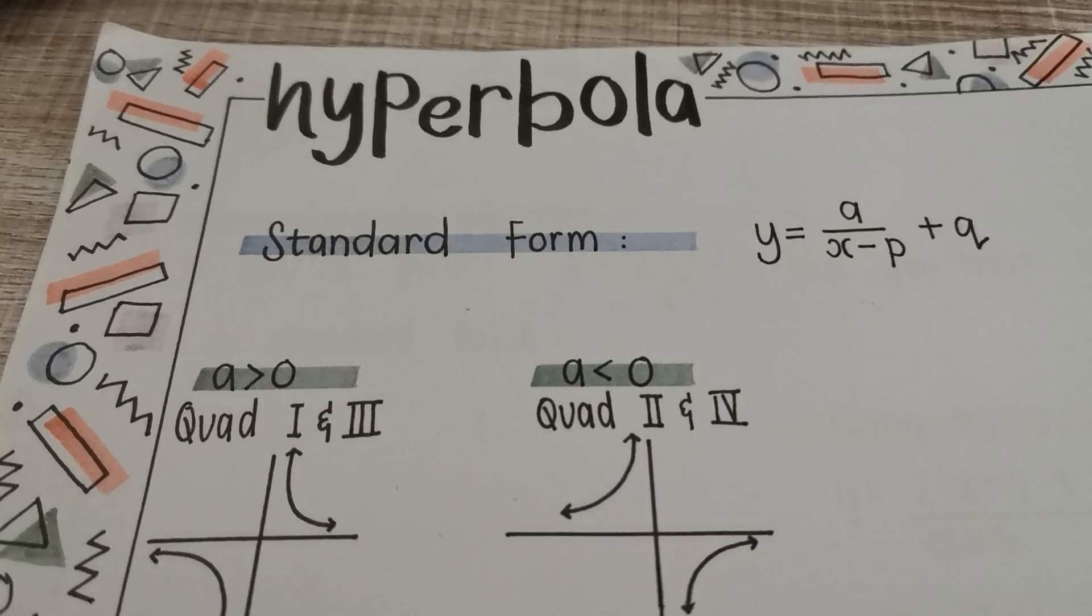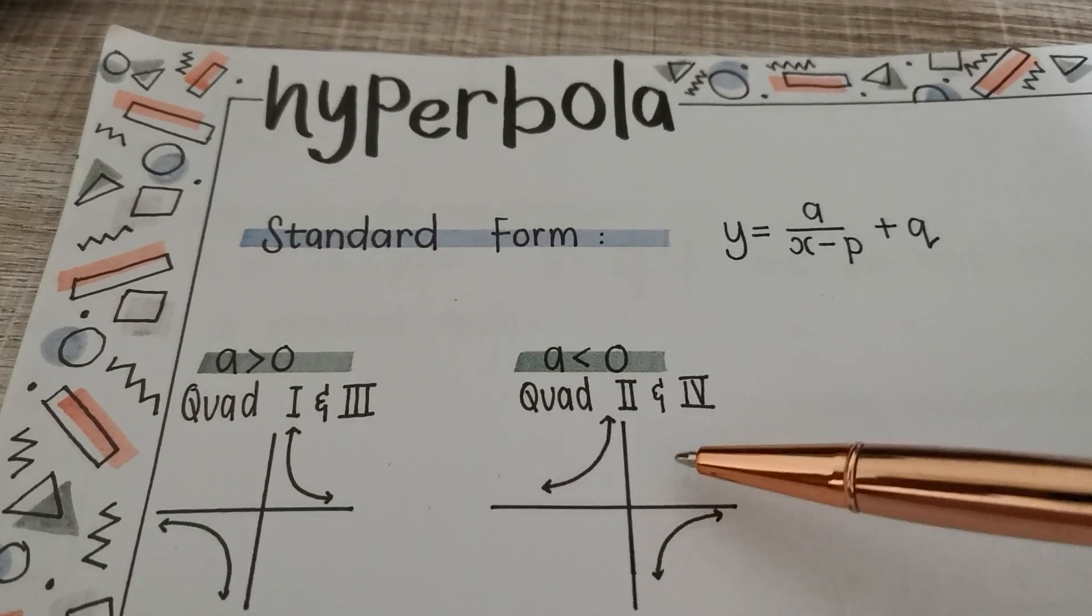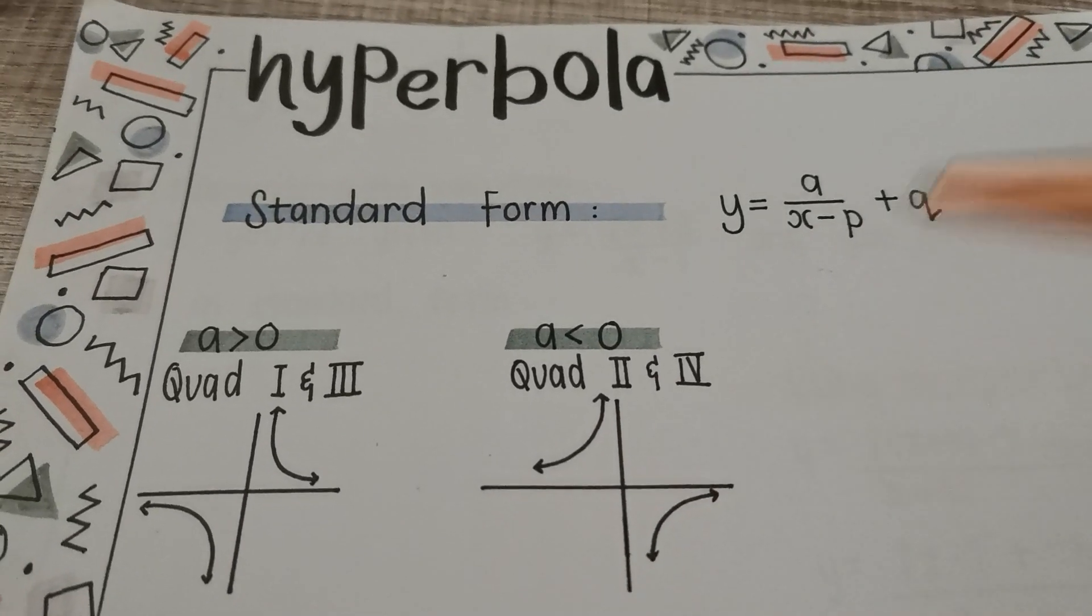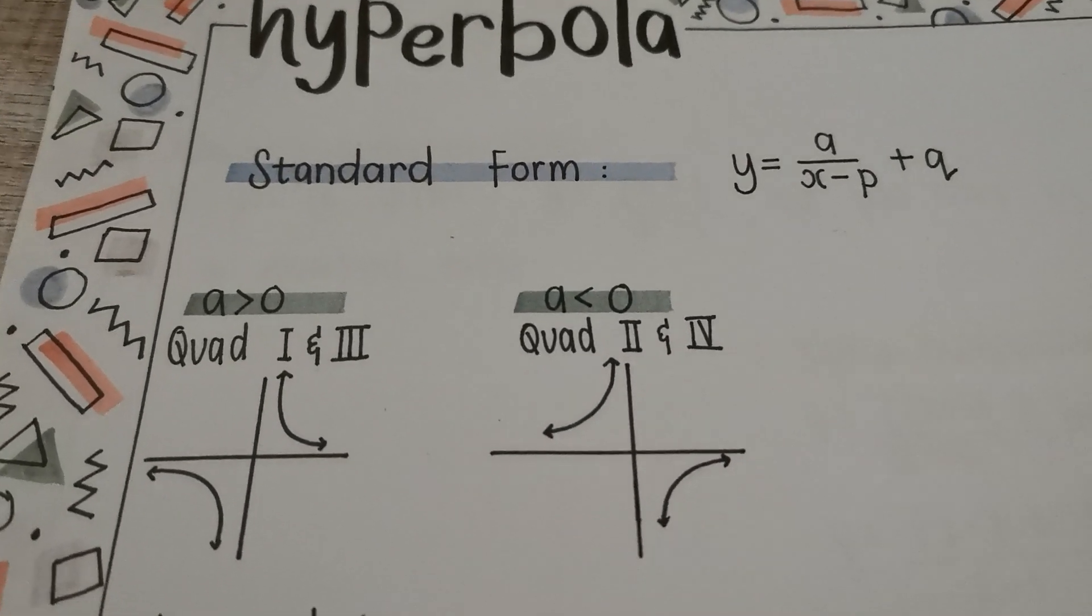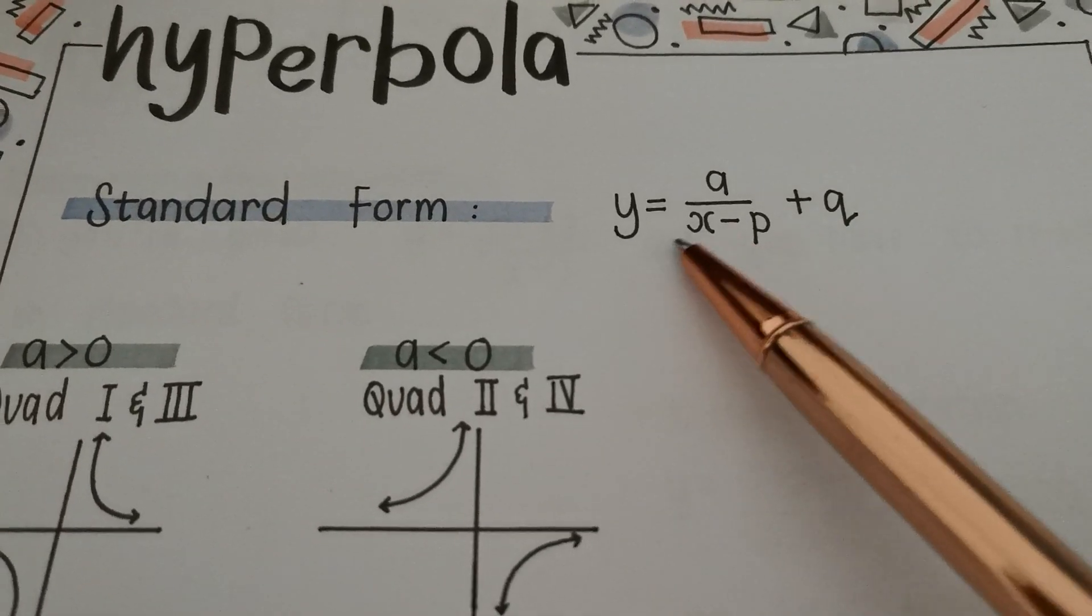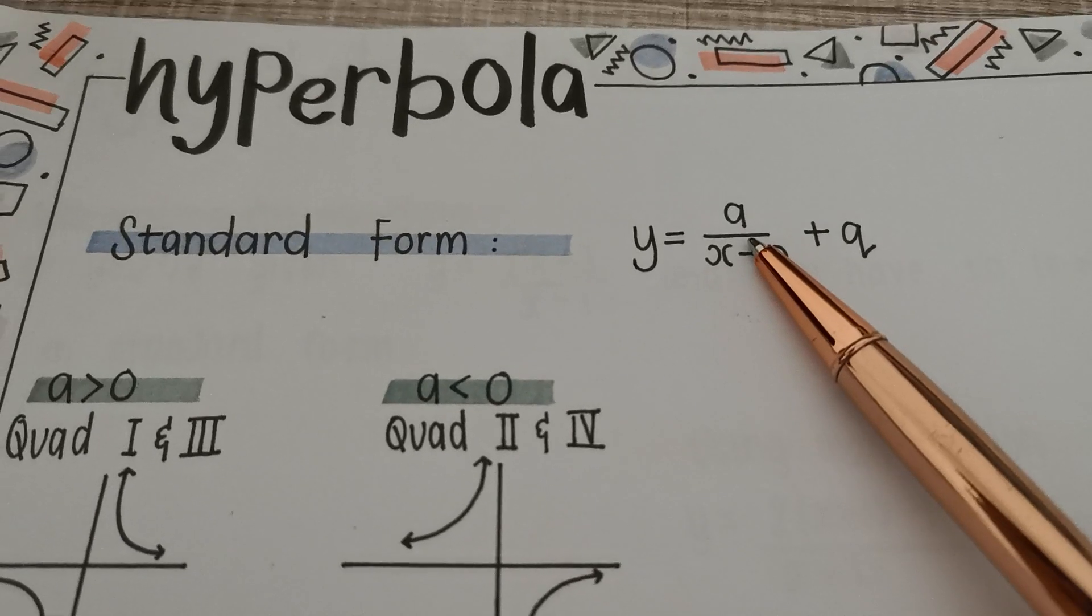Okay, what you guys already know from grade 10 is that a hyperbola looks like this. It has two different arms or legs in two different quadrants. You also learned from grade 10 that the formula looks like this without this p-value. That's the grade 11 stuff, the new stuff.